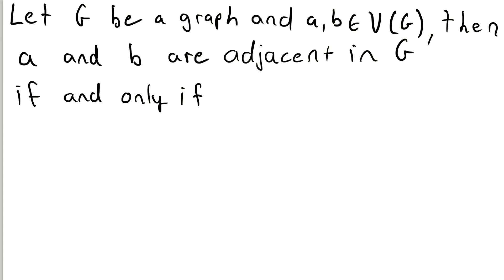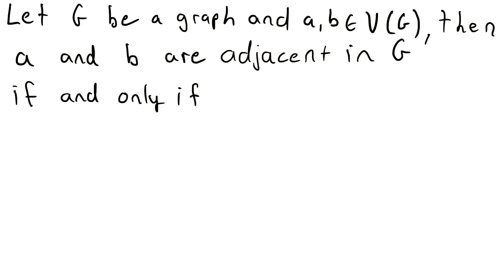Now, let's move on to the formal definition. Just take a quick look at this before we go. So the definition: Let G be a graph and A and B are vertices in G.